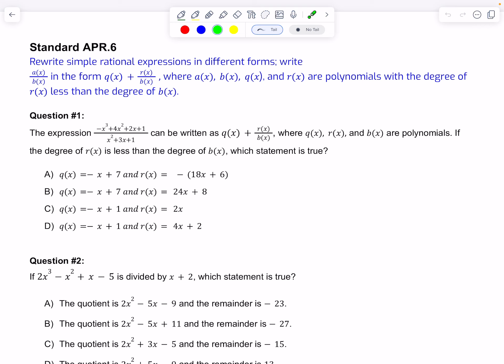They say that Q(x), R(x), and B(x) are polynomials. If the degree of R(x) is less than the degree of B(x), which statement is true?